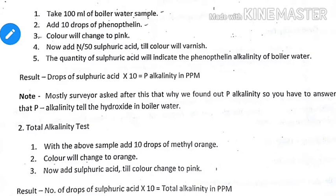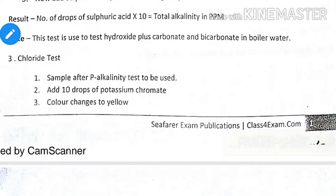Add alkalinity chemical into the boiler water or condensate water to increase the alkalinity. Chloride can enter the boiler water through condenser leakage or fresh water generator/evaporator leakage. This chloride can form acid, which can degrade or erode the tubes. A base should be present in the boiler water to prevent acid corrosion, so we add a basic compound or alkalinity chemical.